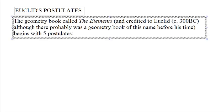Euclid's Postulates. The geometry book called The Elements, credited to Euclid who lived around 300 BC, although there probably was a geometry book called The Elements before his time. The oldest copy we've ever found has his name on the cover, so we give him the credit. His geometry book begins with some definitions and five postulates.